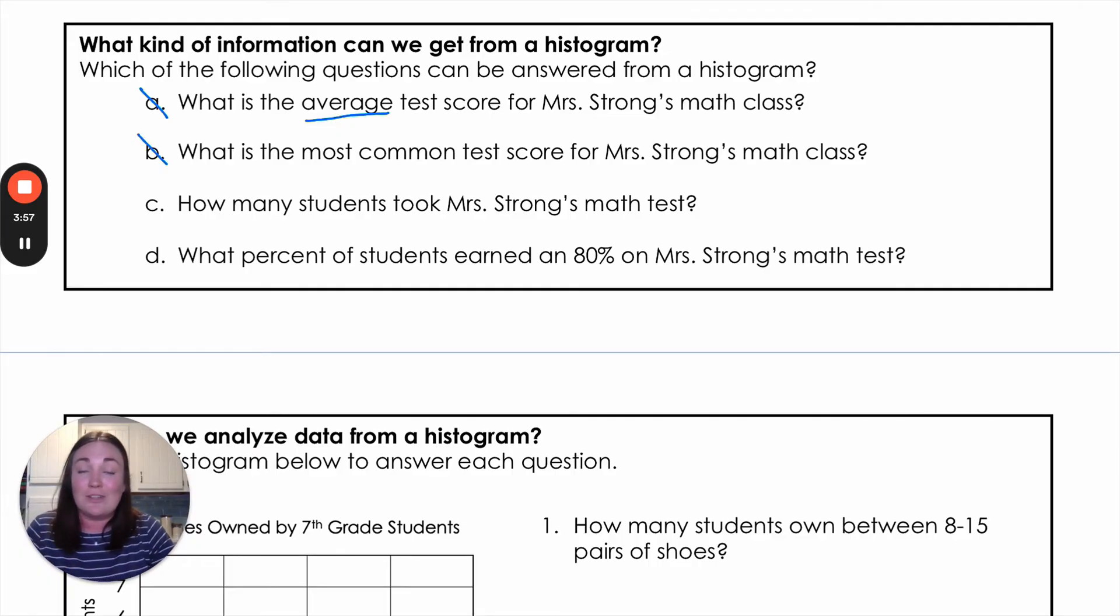How many students took the math test that we can do. So we would add up all those frequency bars like we just did before. So that is a question we can answer using a histogram. And then what percent of students earned exactly an 80 percent? We don't have those individual data points. So again, not something that we can answer.